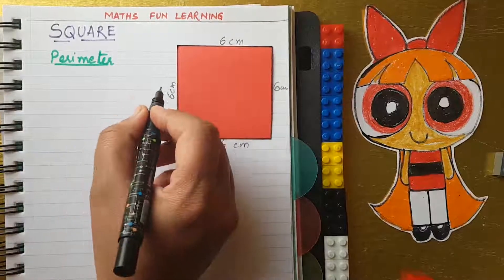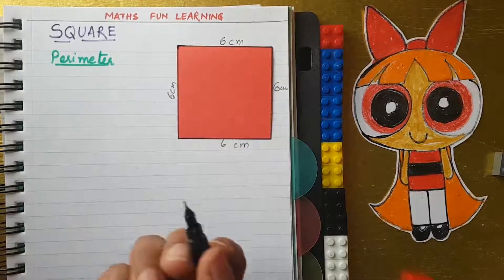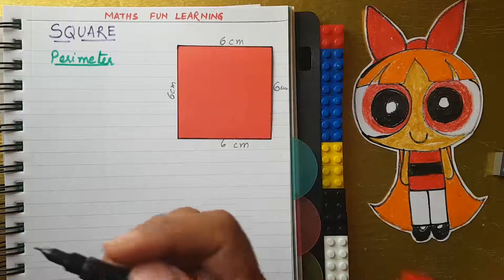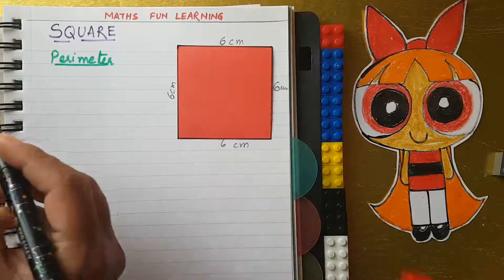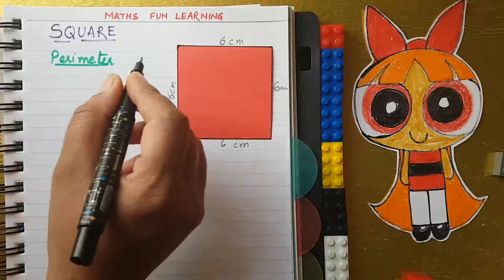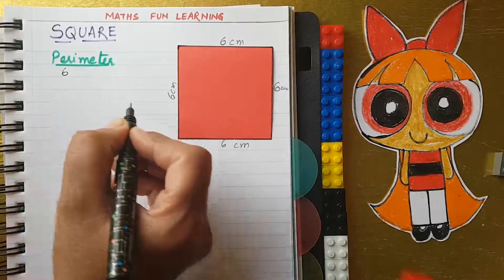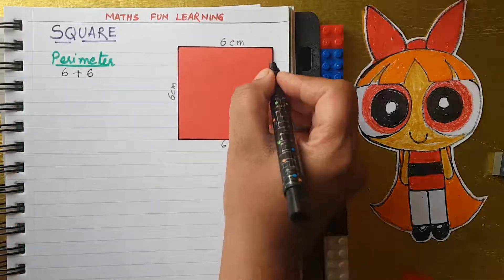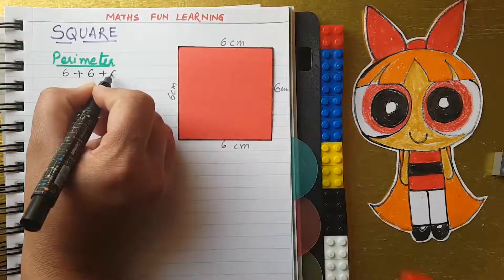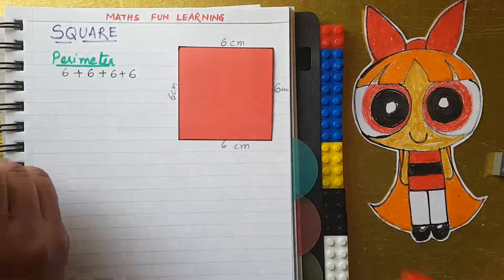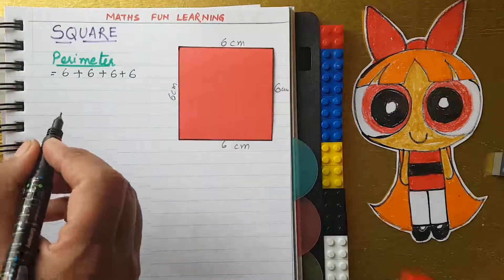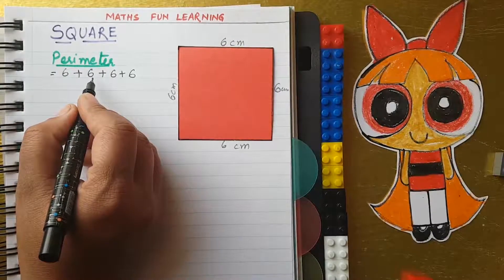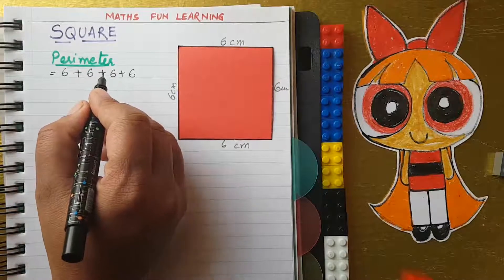You know that the sum of all the boundaries, perimeter means we have to count the boundaries. We have to add all boundaries of the polygon shapes. Now I will add this side, then this side, then this one, and then again the fourth one.